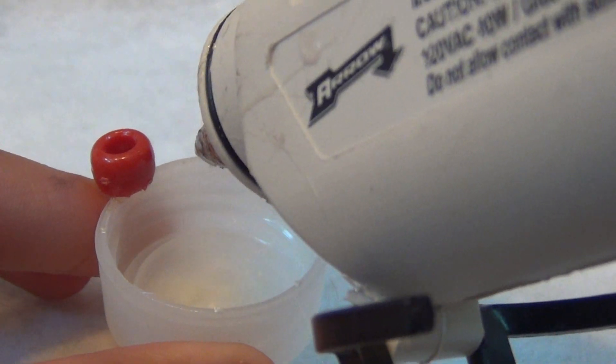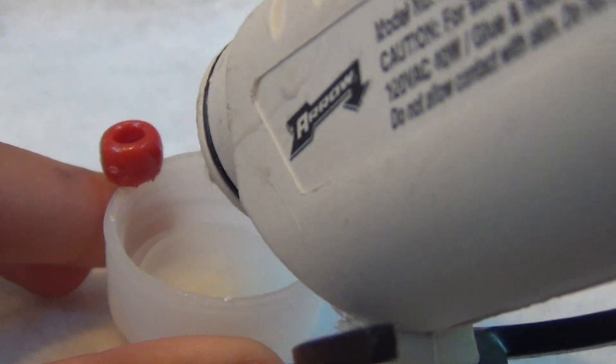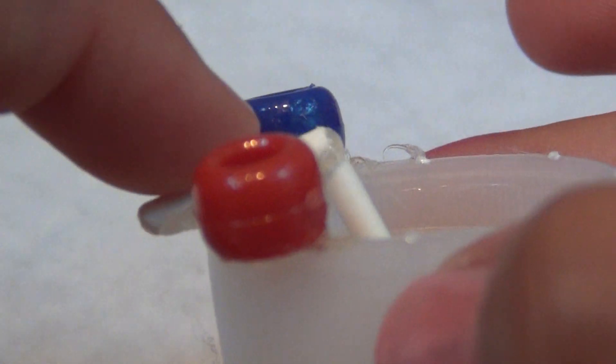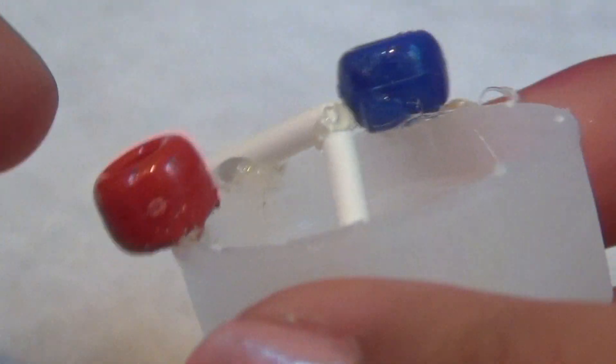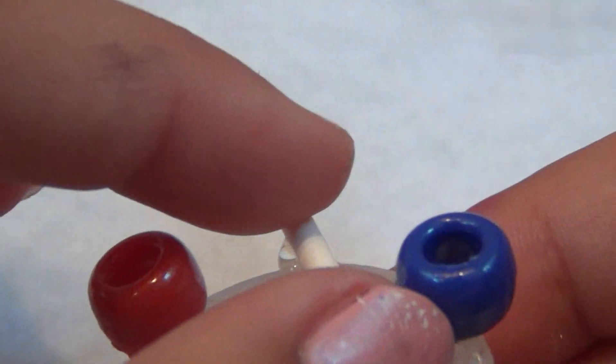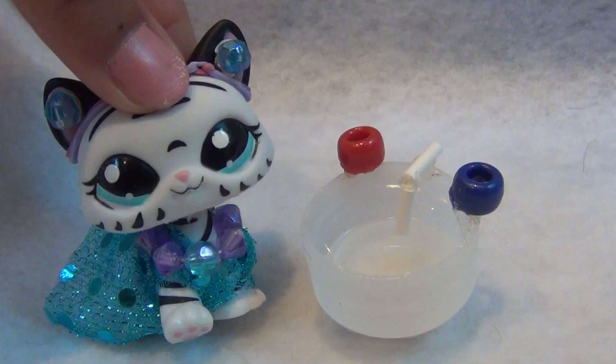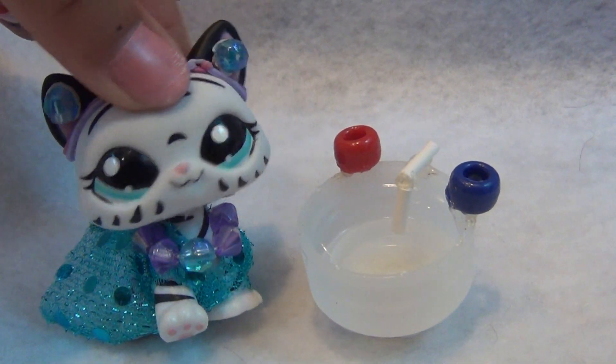Now, glue on your faucet. And that's your LPS sink.